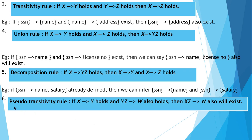The last axiom is the pseudo-transitivity rule, which is similar to the transitivity rule. If x to y exists and yz to w also exists, then we can define a new functional dependency from xz to w. These are the six Armstrong's axioms used to define the closure of a functional dependency.